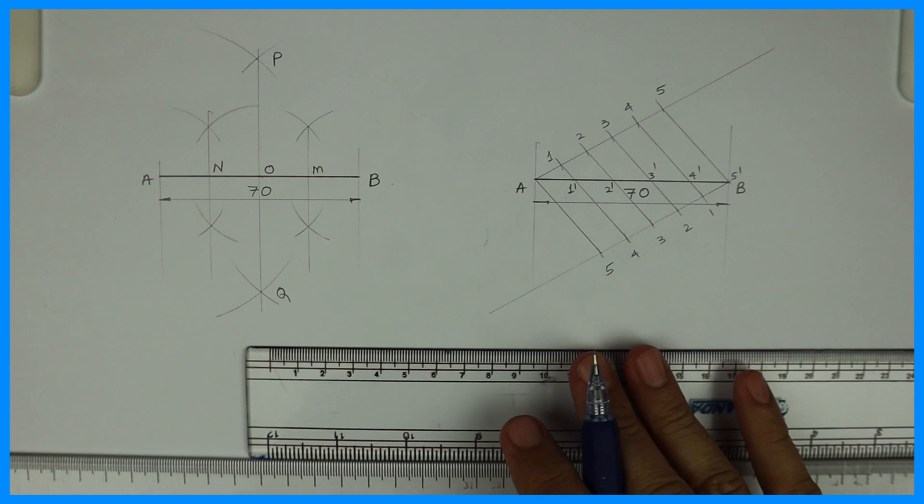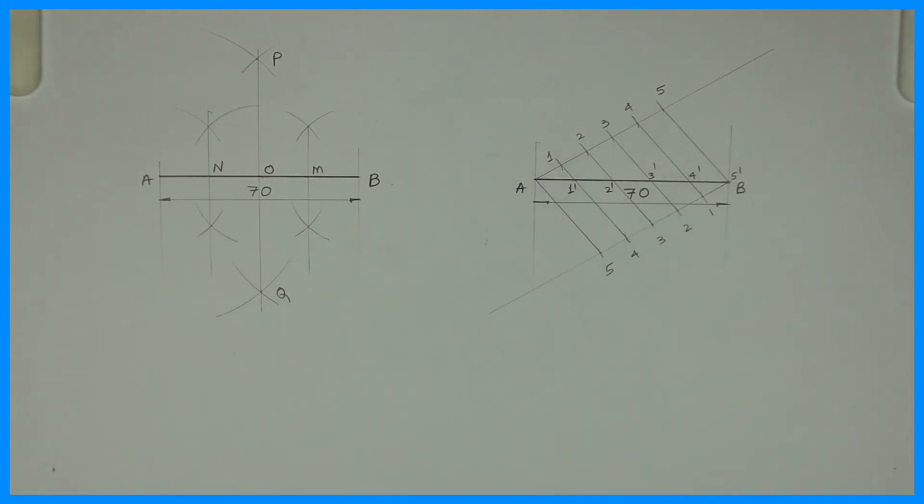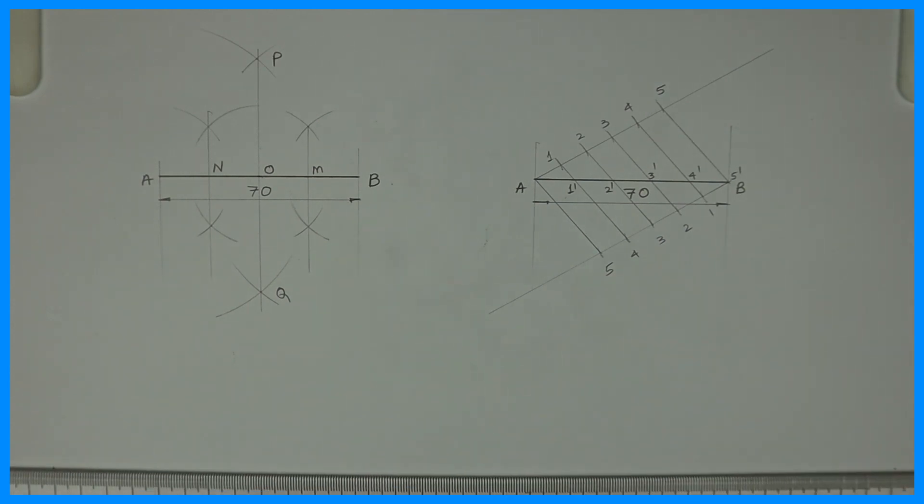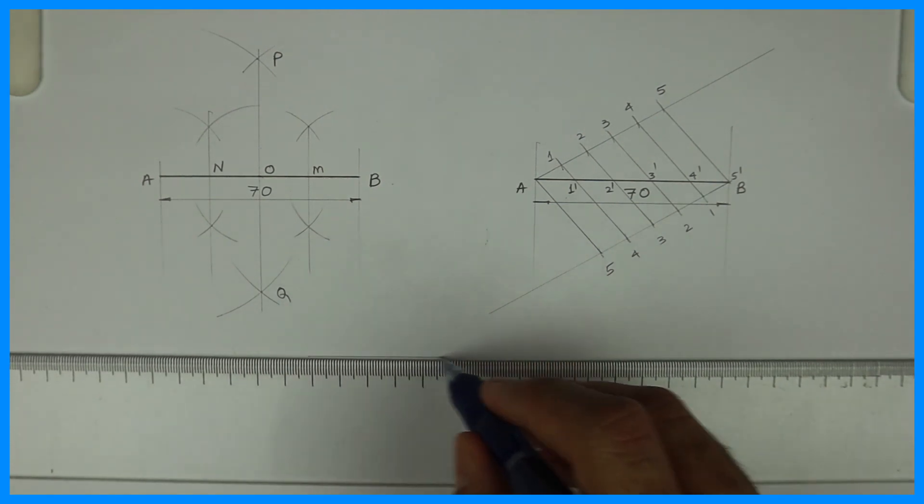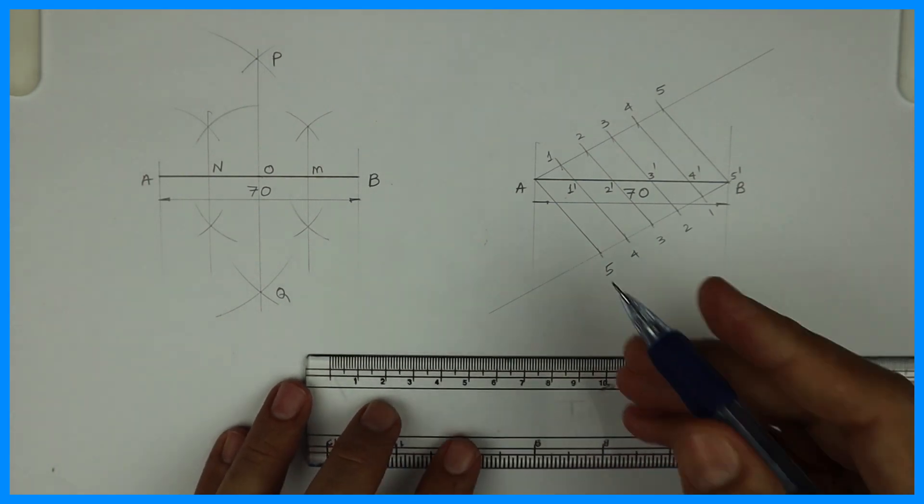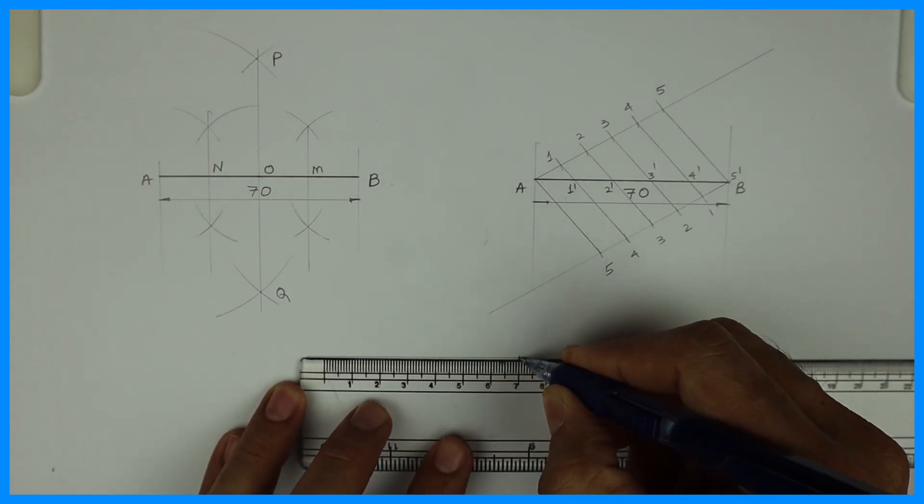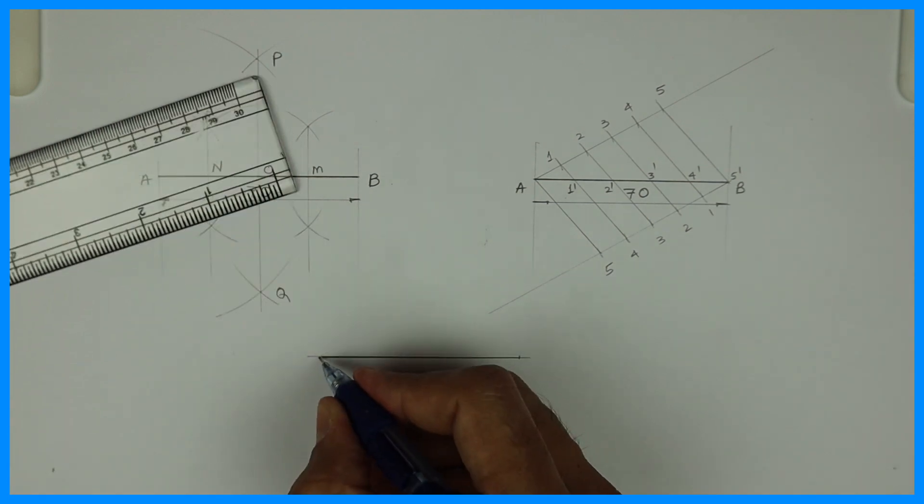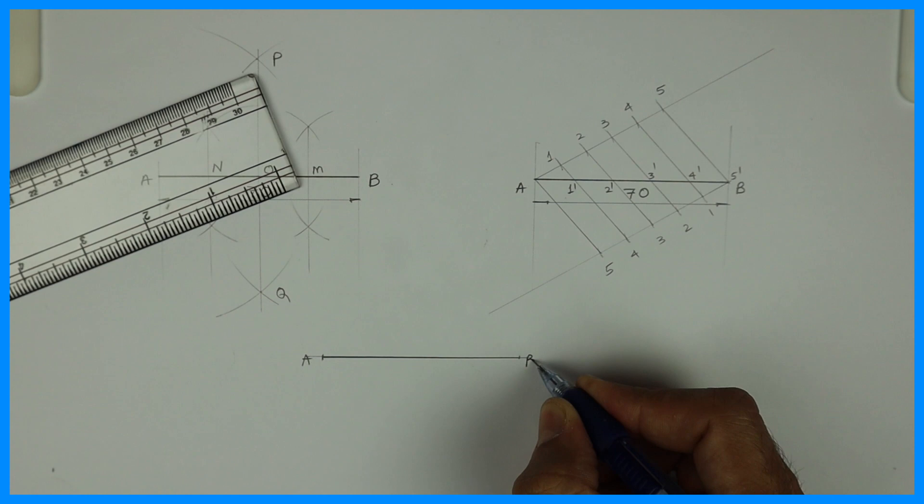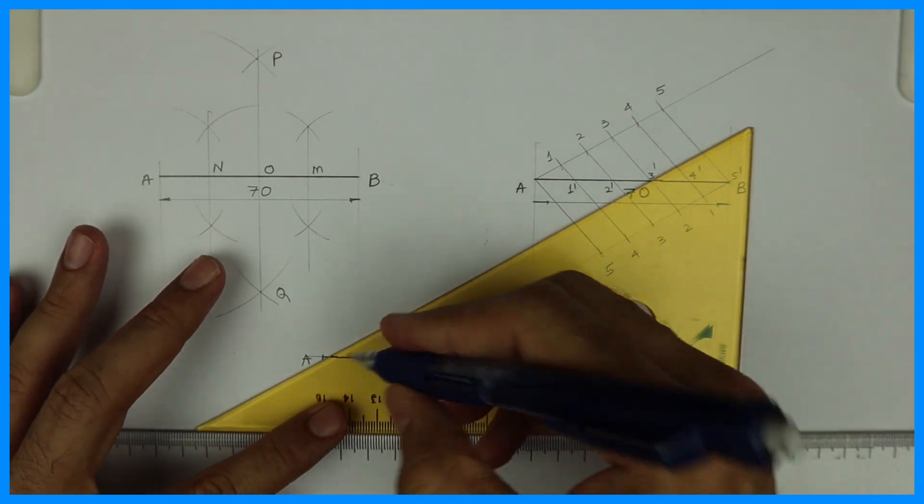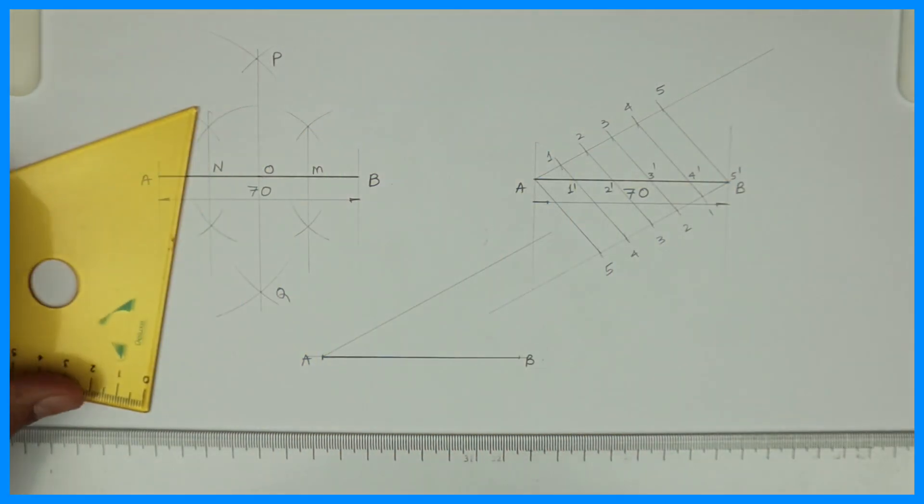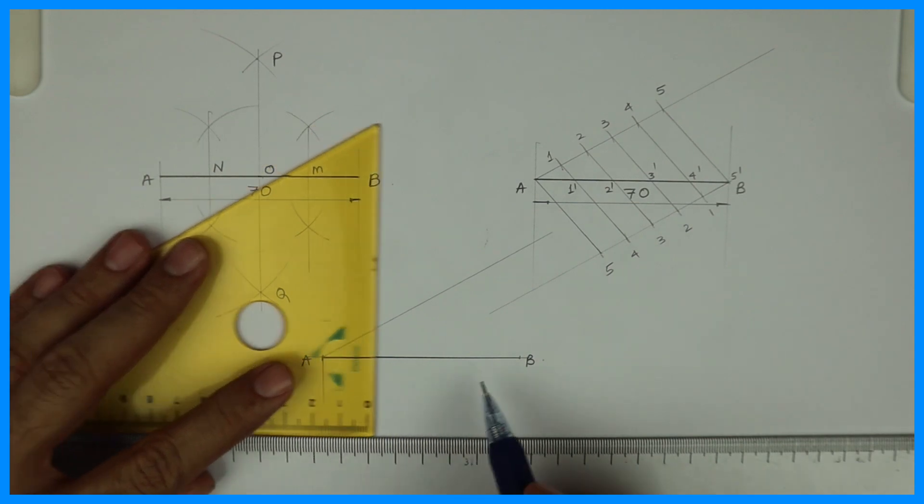So in that case again we will draw line. See first we will draw line AB. We will divide this line AB into how many parts? That's 5 parts. We have done with the previous method. Now I will show you one more method which is like a shortcut. So you take 30 degree upward but you don't take downward. You just take upward, do dimensioning.